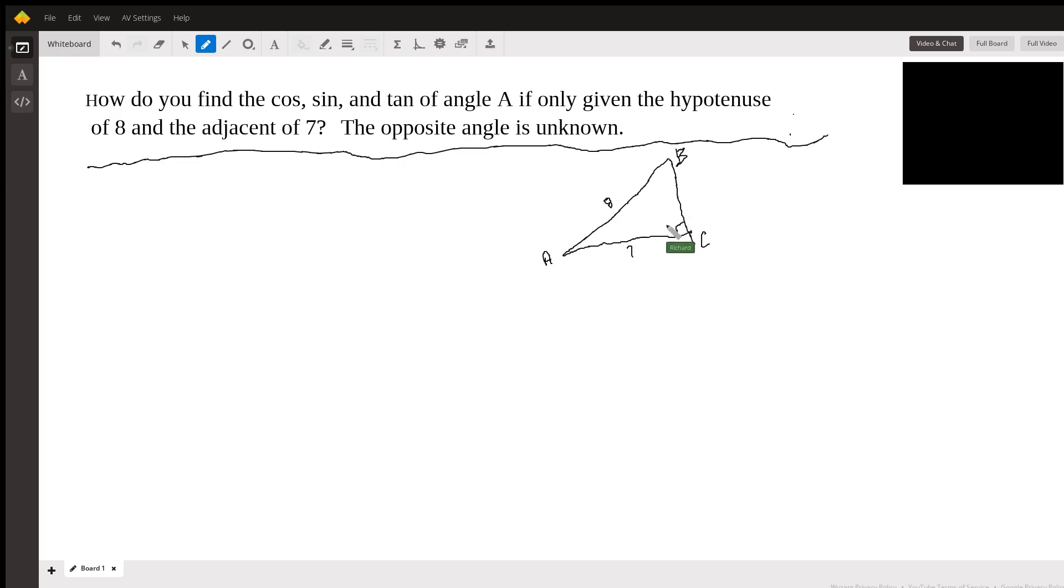So what we're going to do, we'll call this X. We'll find X by Pythagorean theorem. So 7 squared plus X squared equals 8 squared.